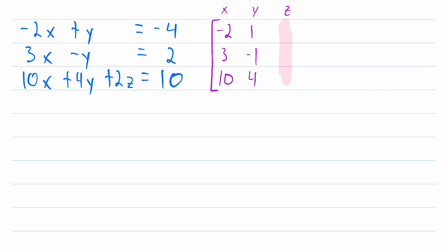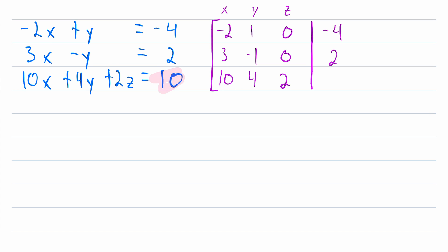The third column represents z. The coefficients of z: in the first equation there is no z, so it has a coefficient of 0. Same thing in the second equation, and then in the third equation it has a coefficient of 2. So 0, 0, 2. That is where the coefficient matrix stops, but we're joining it with the constant matrix, so we draw a line to separate them. The constant of the first equation is negative 4, the second equation is positive 2, and the constant of the third equation is positive 10. And that is our augmented matrix representing this system of linear equations.